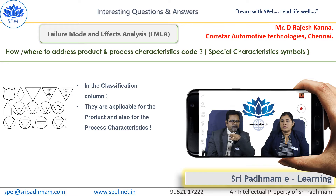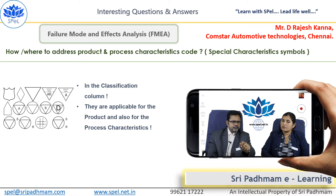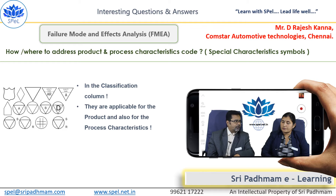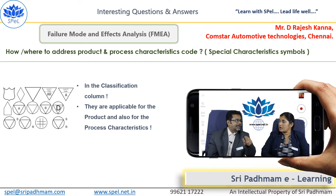A very important learning point: they are applicable both for product as well as process characteristics. Many people comfortably forget about the process characteristics. These symbols are applicable not only for product but also for the process characteristics — relevant process characteristics.